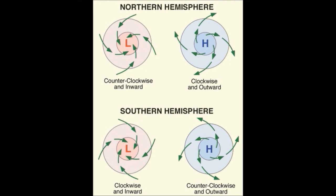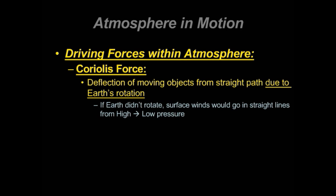Which is also illustrated here in these diagrams. And I'll let you pause it, stop, look, analyze. Our third key driving force within Earth's atmosphere is the Coriolis force. Key to understanding this is it causes a deflection of all moving objects, missiles, airplanes, hurricanes, from its straight path due to Earth's rotation. So Earth's rotation is key to understanding and causing the Coriolis force. If Earth didn't rotate, all winds would go in a perfectly straight line from a high to low pressure.